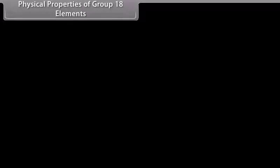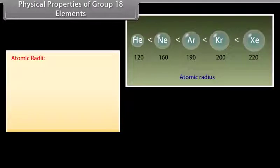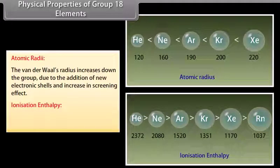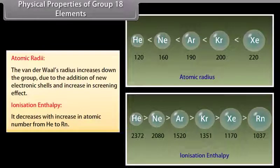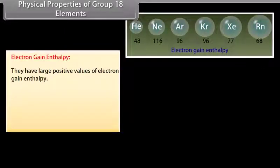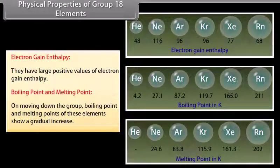Physical properties of group 18 elements: Atomic radii in noble gases correspond to van der Waals radii, which increase down the group due to addition of new electronic shells and increasing screening effect. Ionization enthalpies of noble gases are very high due to their stable configurations, and decrease with increase in atomic number from helium to radon. Since noble gases have stable electronic configurations, they have no tendency to accept electrons and have large positive values of electron gain enthalpy. Boiling and melting points show a gradual increase down the group due to increasing van der Waals forces of attraction.